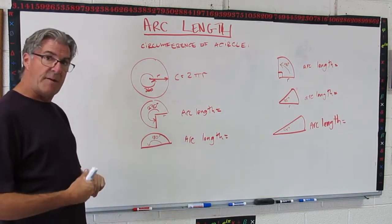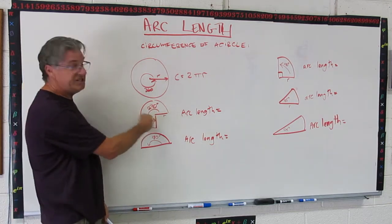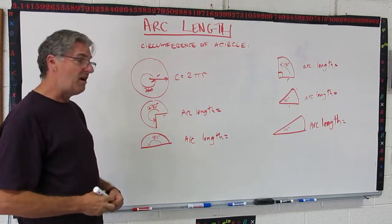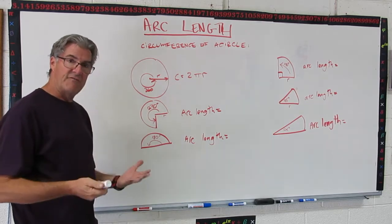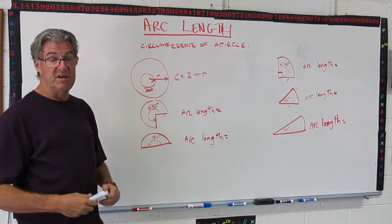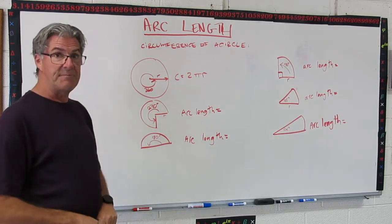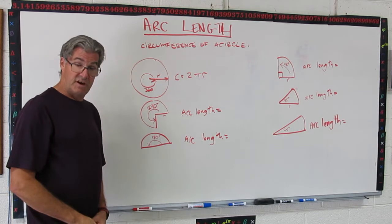But now let's start chopping that up a little bit. Let's say we go 270 degrees around instead of 360. So we're not all the way around. What would the length of this arc be? We can't call it a circumference because it's not going all the way around, so we call it an arc. And that's pretty much what we'll be doing in this chapter. So just remember an arc is a partial circumference.